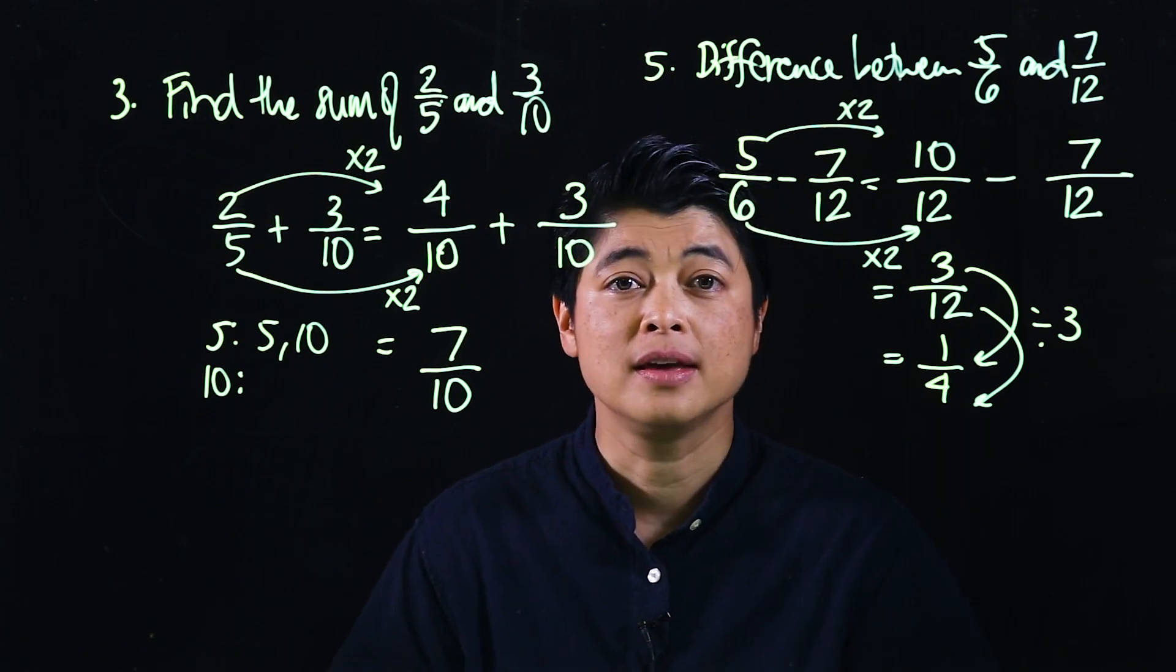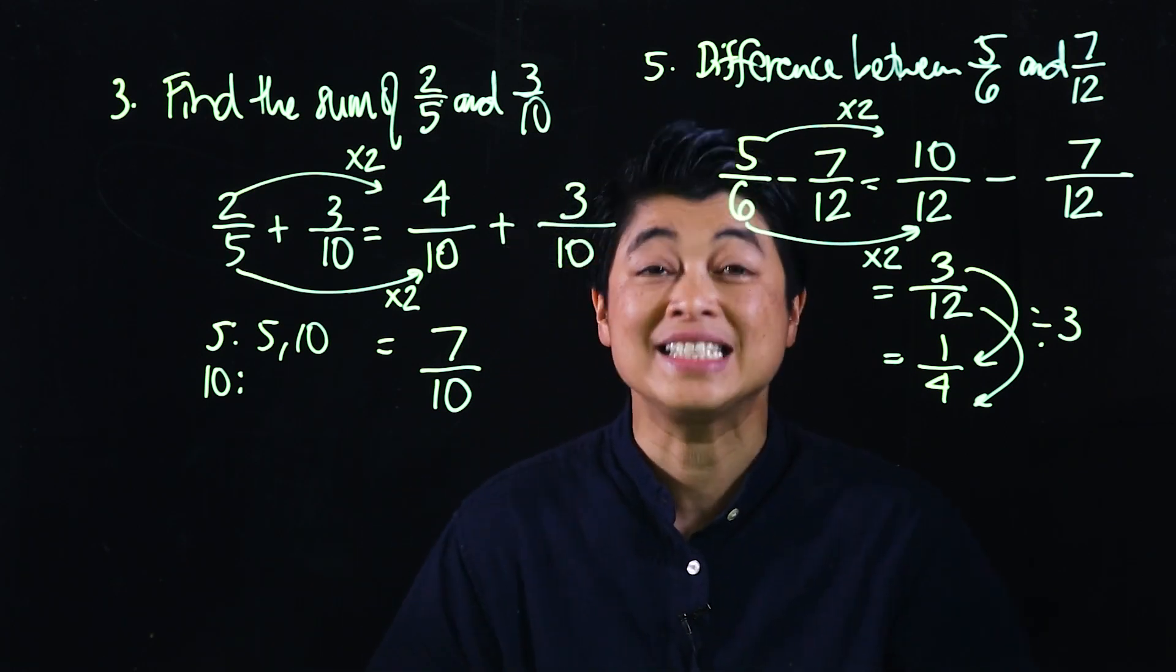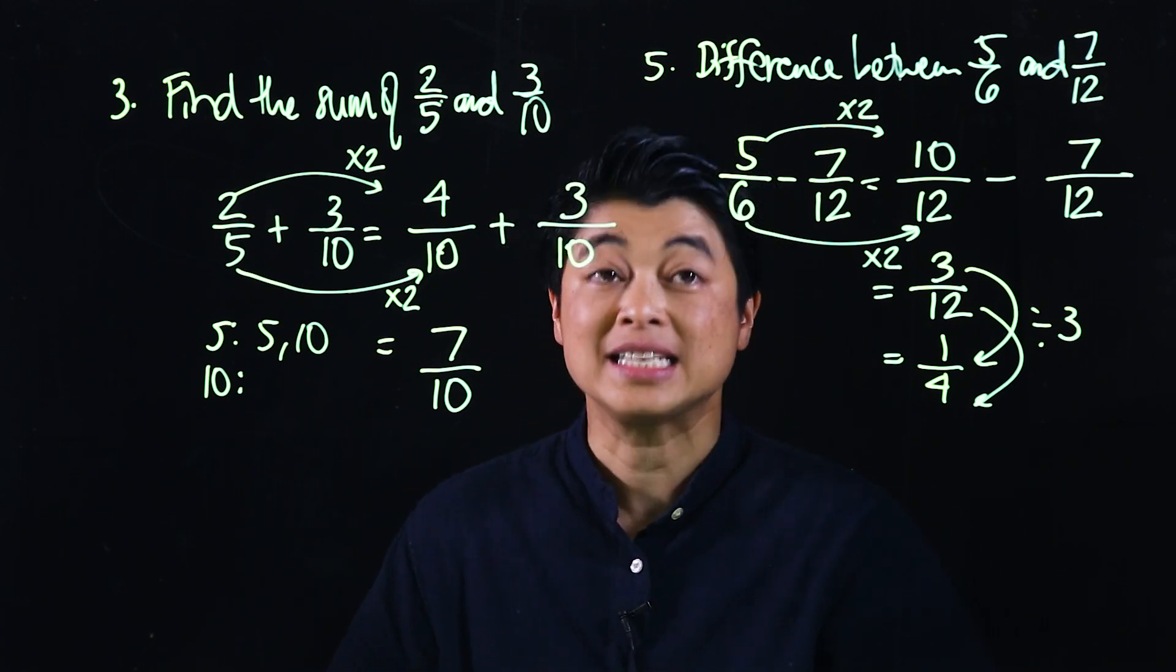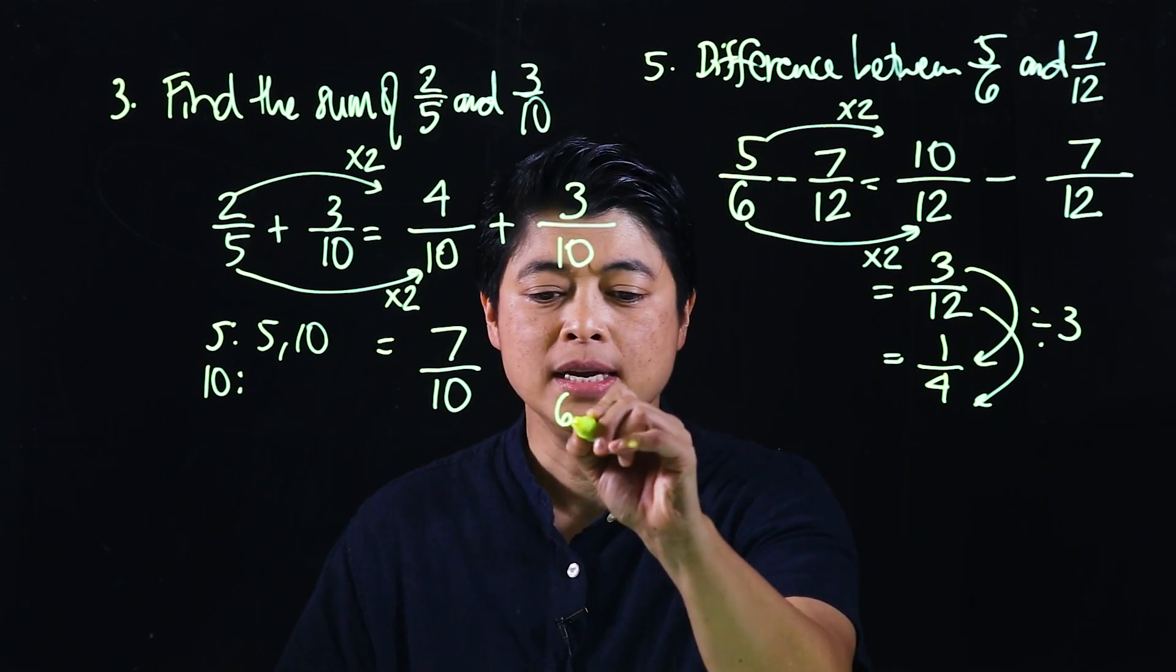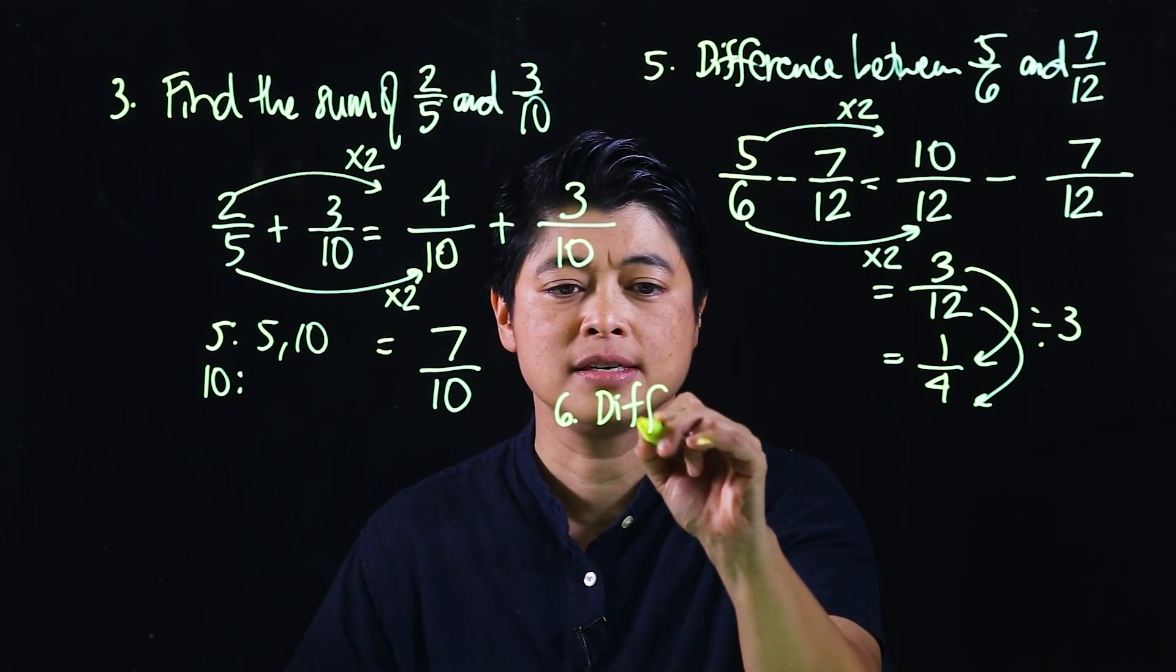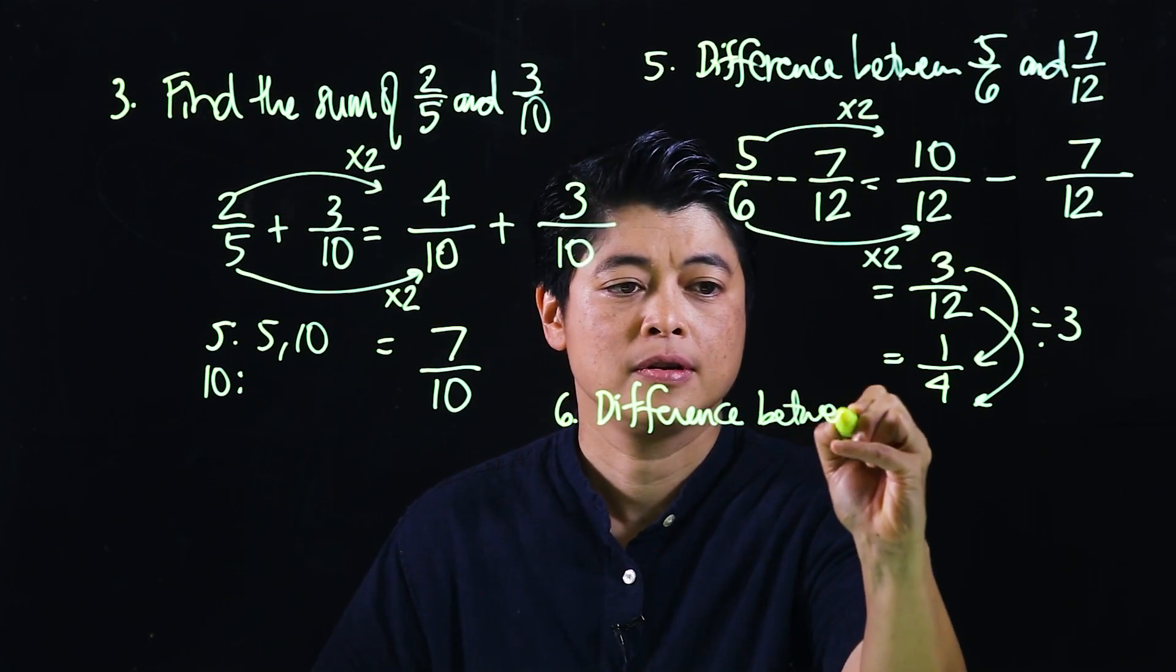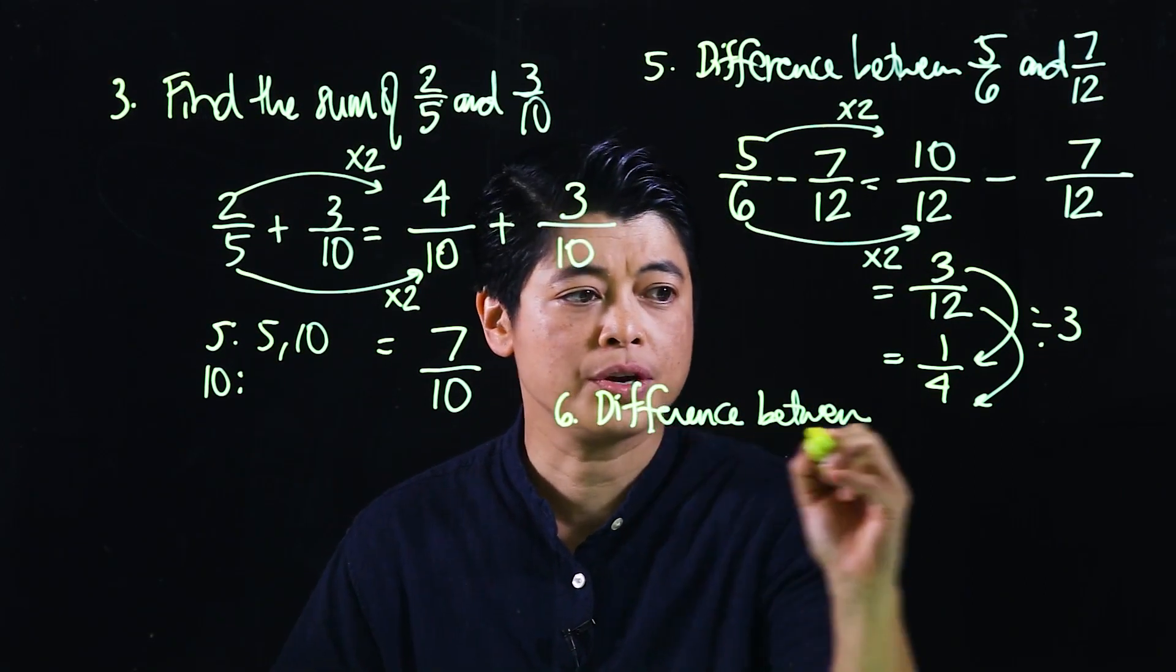Finally, problem number six on the same page says find the difference between two-thirds and five-ninths.